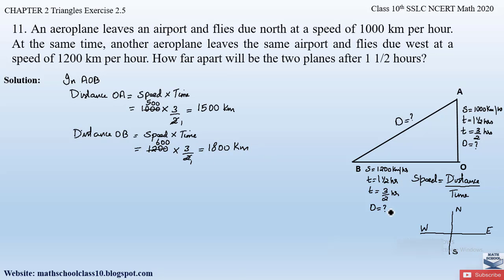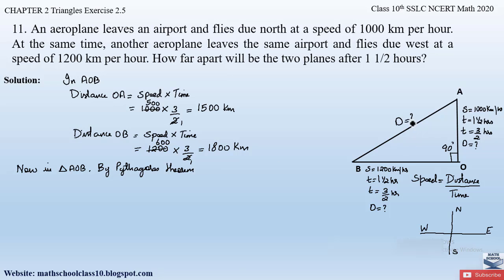We have to find out the distance AB. Since north and west are at 90 degrees to each other, angle AOB is a right angle. Therefore AOB is a right-angled triangle, and we can apply the Pythagoras theorem in triangle AOB to calculate the distance AB. By Pythagoras theorem, the hypotenuse squared equals the sum of the squares of the other two sides. The side opposite the 90-degree angle is AB, so AB is the hypotenuse.